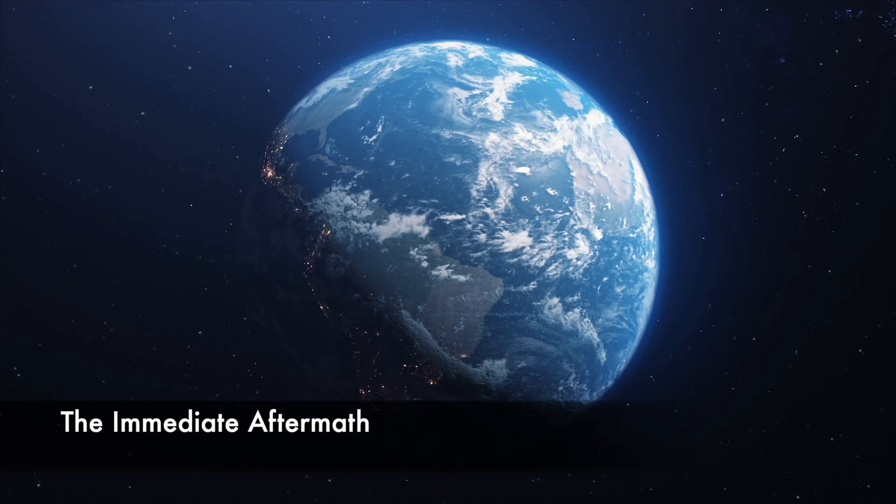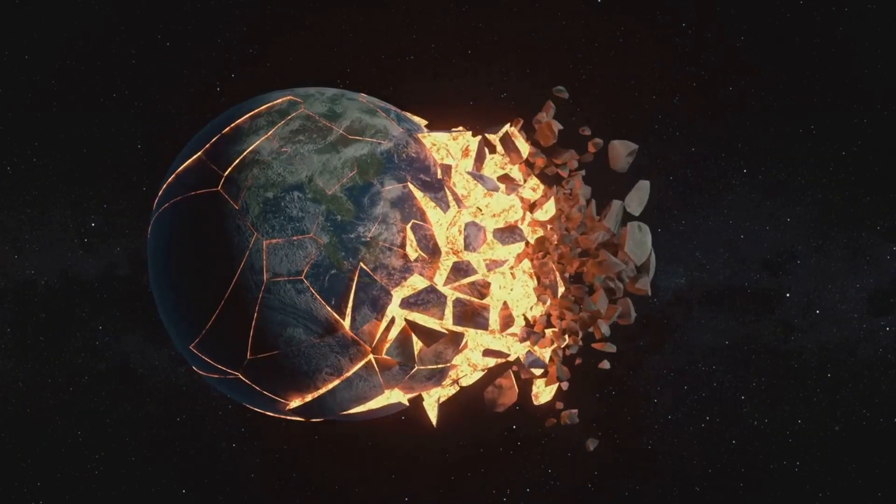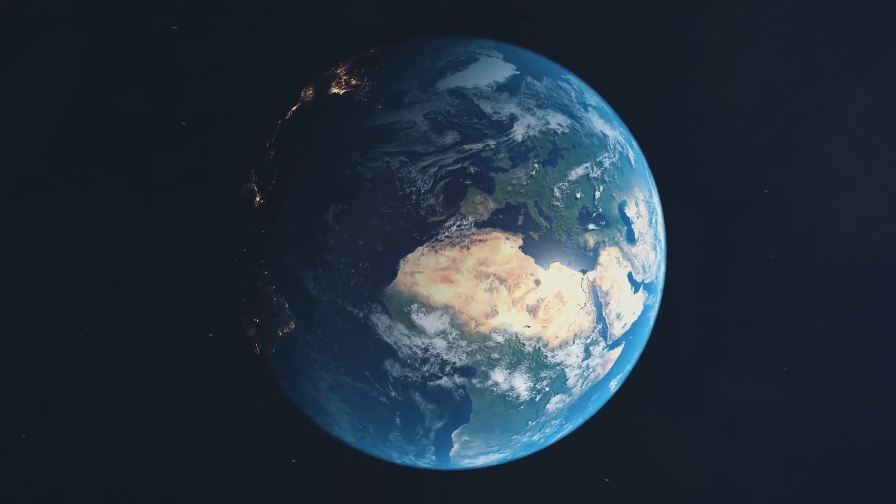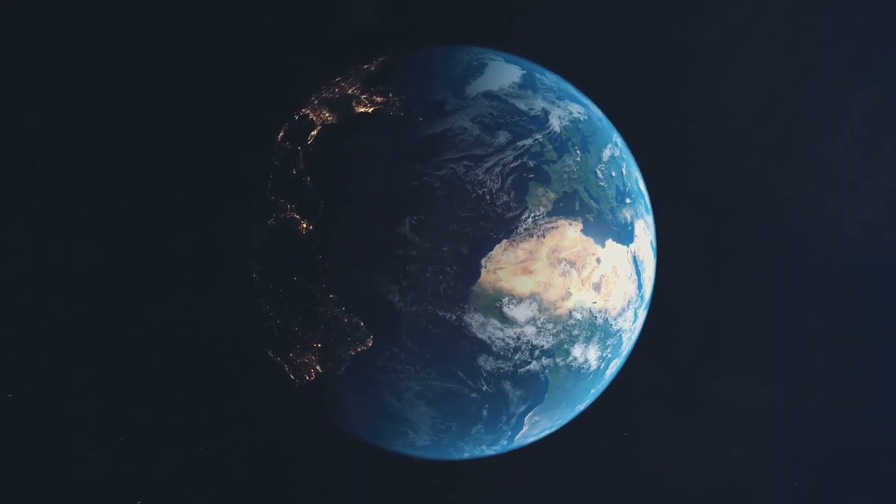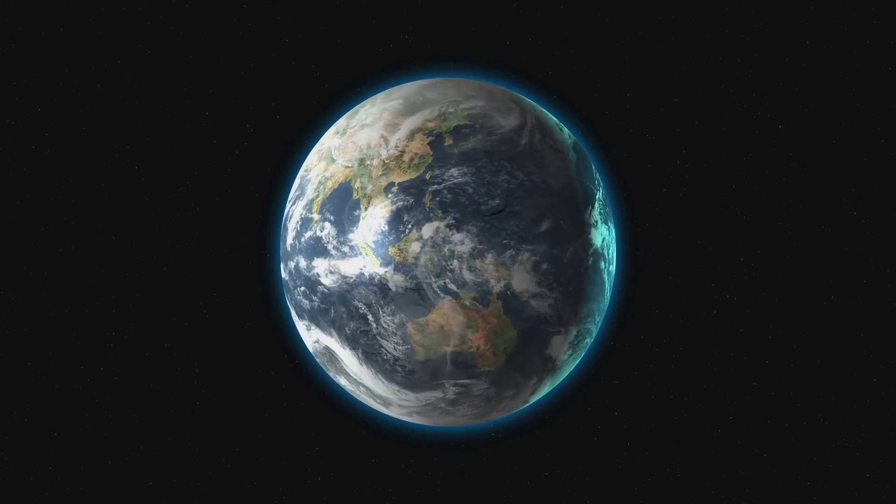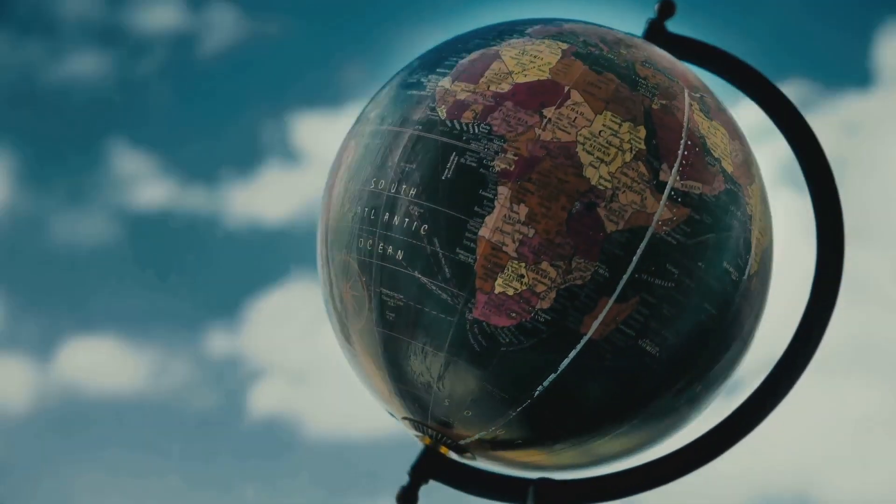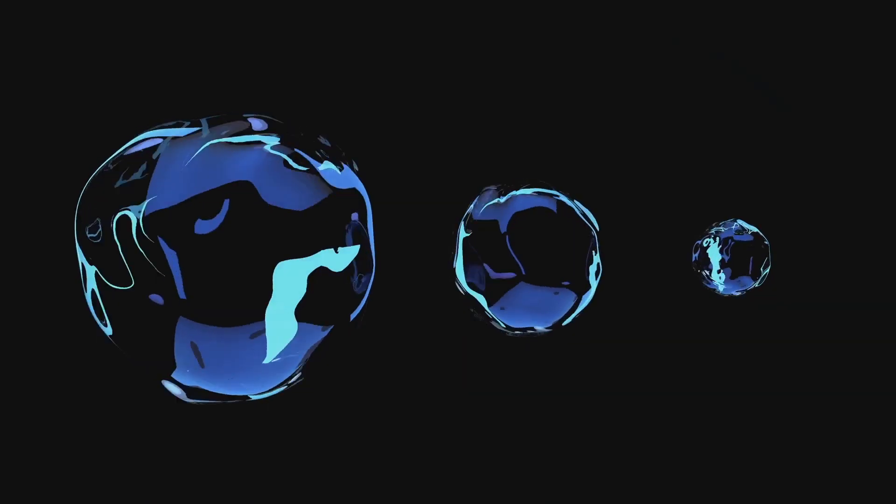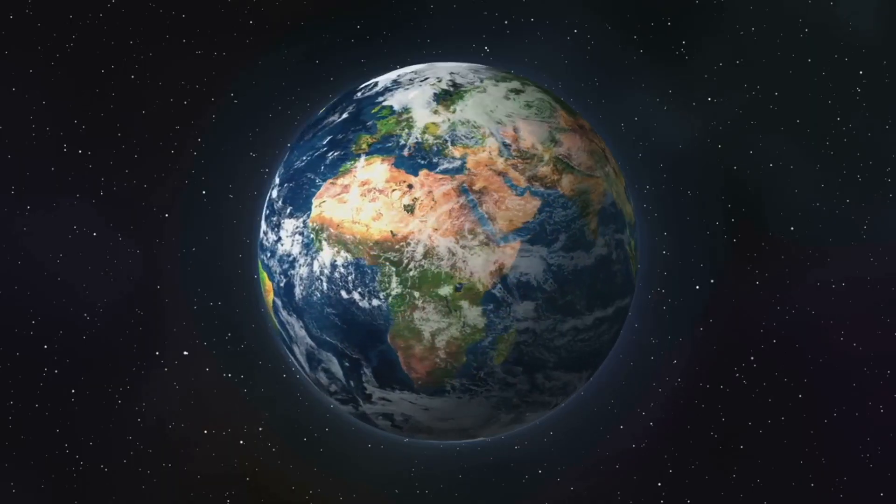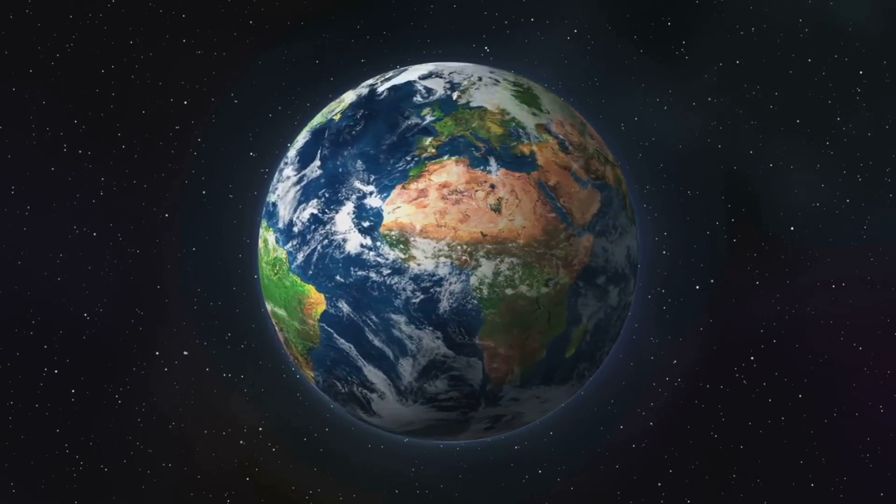The immediate effects of the earth's cessation would be catastrophic. This isn't an understatement, but rather a stark reality of the physics involved. Imagine the spinning earth as a colossal merry-go-round. Everything on it, from the air we breathe to the ocean's waters, is in constant motion. When the earth stops spinning abruptly, these things wouldn't. The law of inertia tells us that an object in motion tends to stay in motion. Consequently, the atmosphere and oceans would continue their eastward sprint while the land comes to a sudden halt.